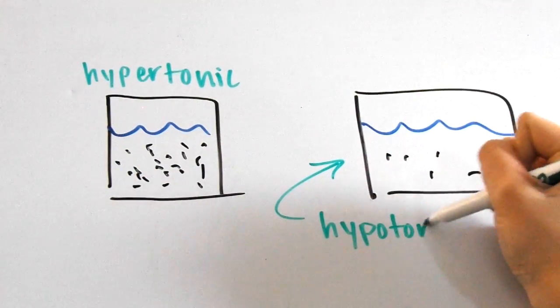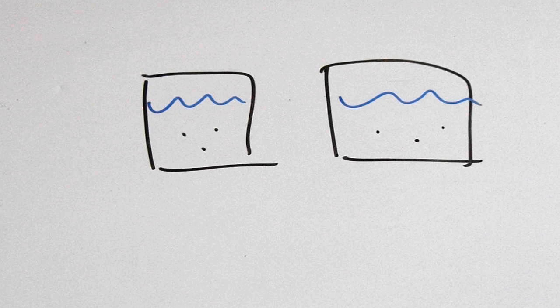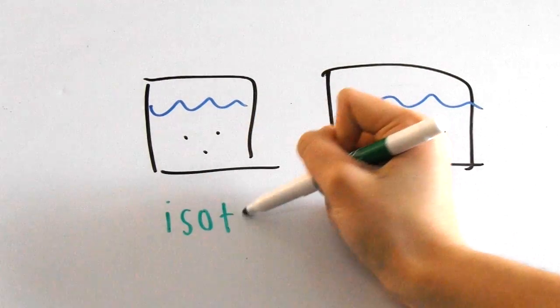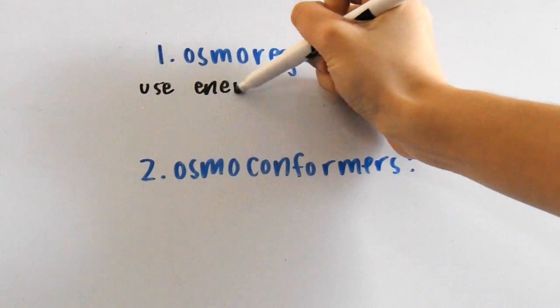That means that this other solution is hypotonic to the one we just talked about because it has a lower solute concentration. Furthermore, if the two solutions have the same amount of solutes, then we would say that they are isotonic to one another.